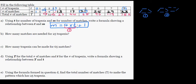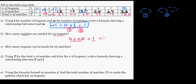How many matches are needed for twenty-five trapezoids? We know the formula M equals four times t plus one, so it's four times twenty-five plus one. You multiply first, then add: that's one hundred plus one, which is one hundred and one matches.